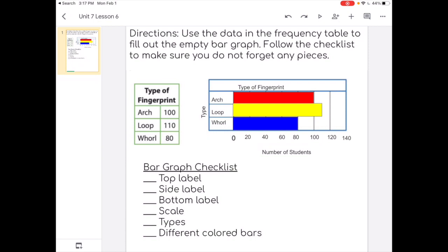Okay. So we have all of our labels. The top, the side, and the bottom. We have our scale going across. And our scale has the same increments of 20 for this one. Because that's what makes sense. We have the three types. Filled in the arch, loop, and whorl. And then we have different colored bars that represent the data from the frequency table.